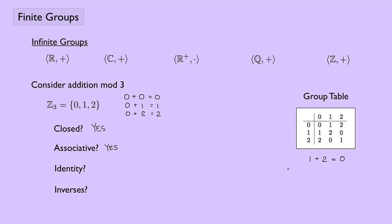Here's one example. Suppose we want to check if (0 plus 2) plus 1 equals 0 plus (2 plus 1). On the left: 2 plus 1 is 0 from the table, so 0 plus 0 equals 0. On the right: 0 plus 2 is 2, and 2 plus 1 is also 0. Both sides equal 0, so it works. You could go through and check all the other possibilities.